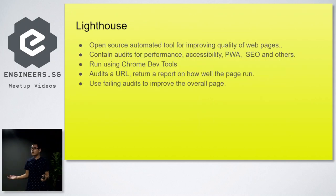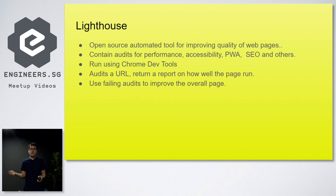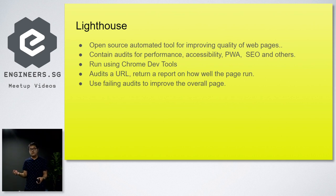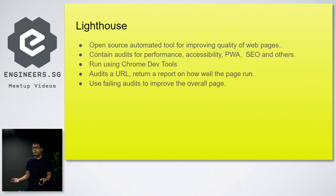Google's Lighthouse is an open source automated tool for improving the quality of web pages. It has different characteristics and features we can look into to determine how to improve our website. It contains audits for performance, progressive web applications, search engine optimization, and other features. You can run it using Chrome DevTools on the Google Chrome browser. How does Lighthouse work? First, we audit a URL we are testing, and it returns a report on how well the page runs. The development team then uses the failing audits to improve the overall page.